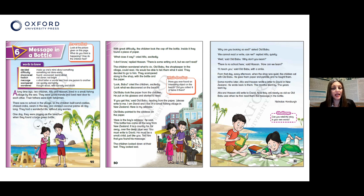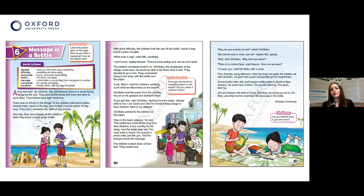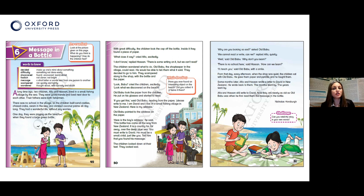Old Babu took the paper from the children, put on his glasses, and started to read. 'If you get this,' said old Babu reading from the paper, 'please write to me. I am David and I live in a small fishing village in New Zealand. Here is my address.' Old Babu pointed to the address on the paper. 'This note has come all the way from New Zealand — it is a country far, far away over the deep blue sea. You must write to David. He must be a small child just like you. Tell him that you found his message.'